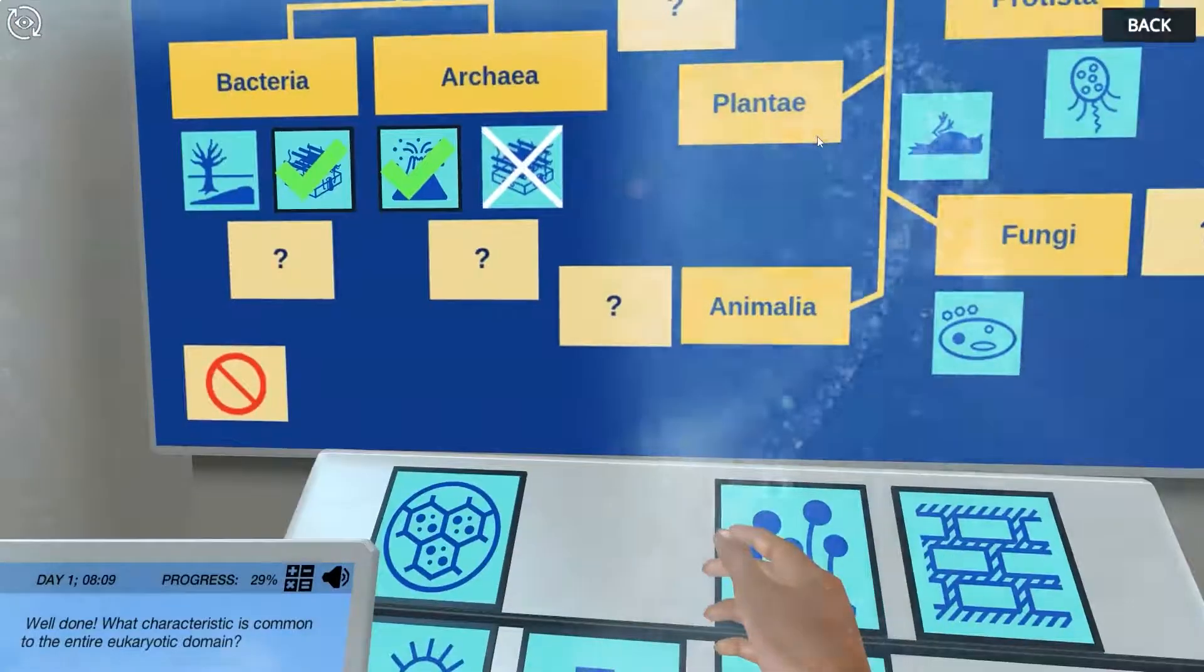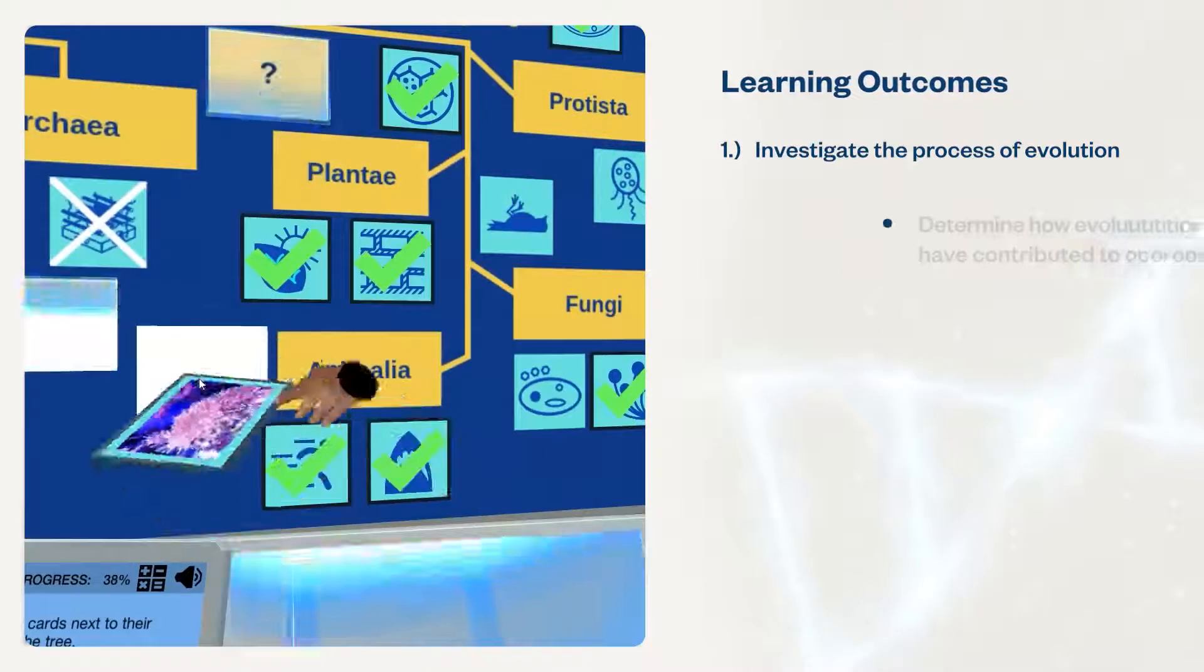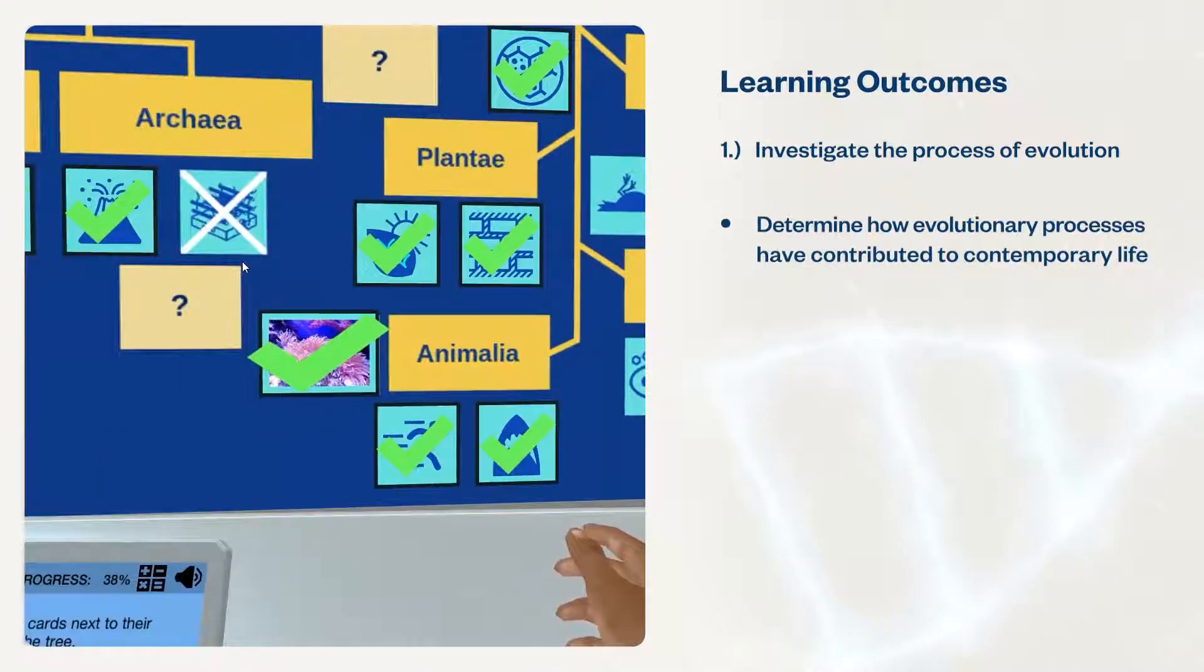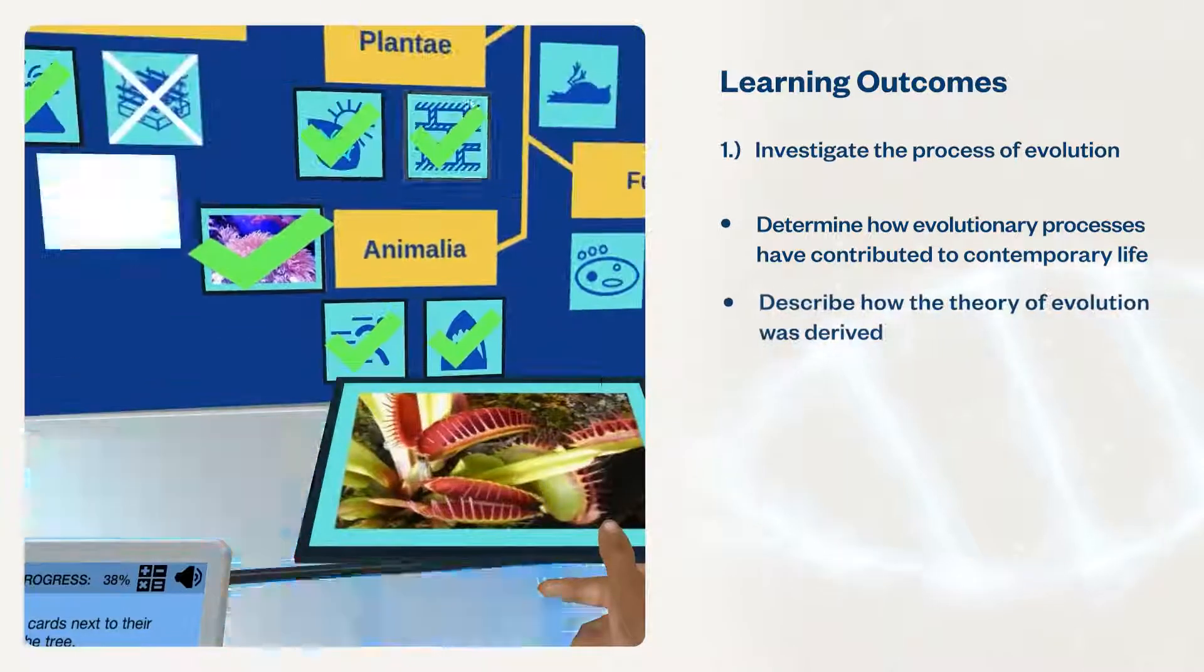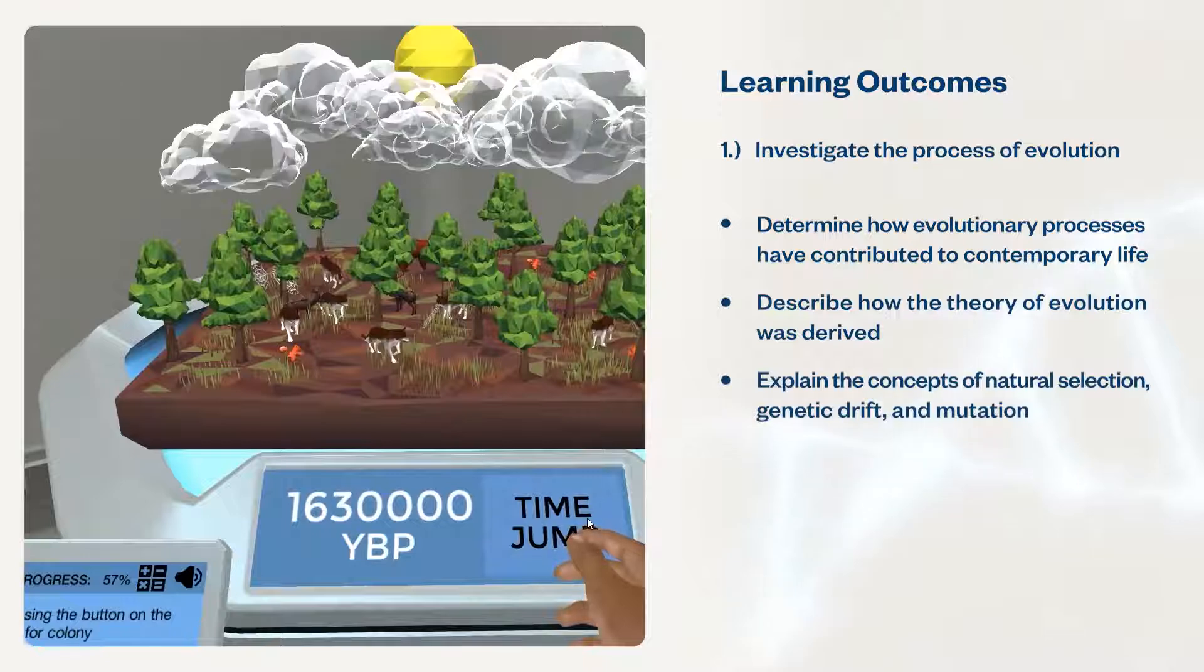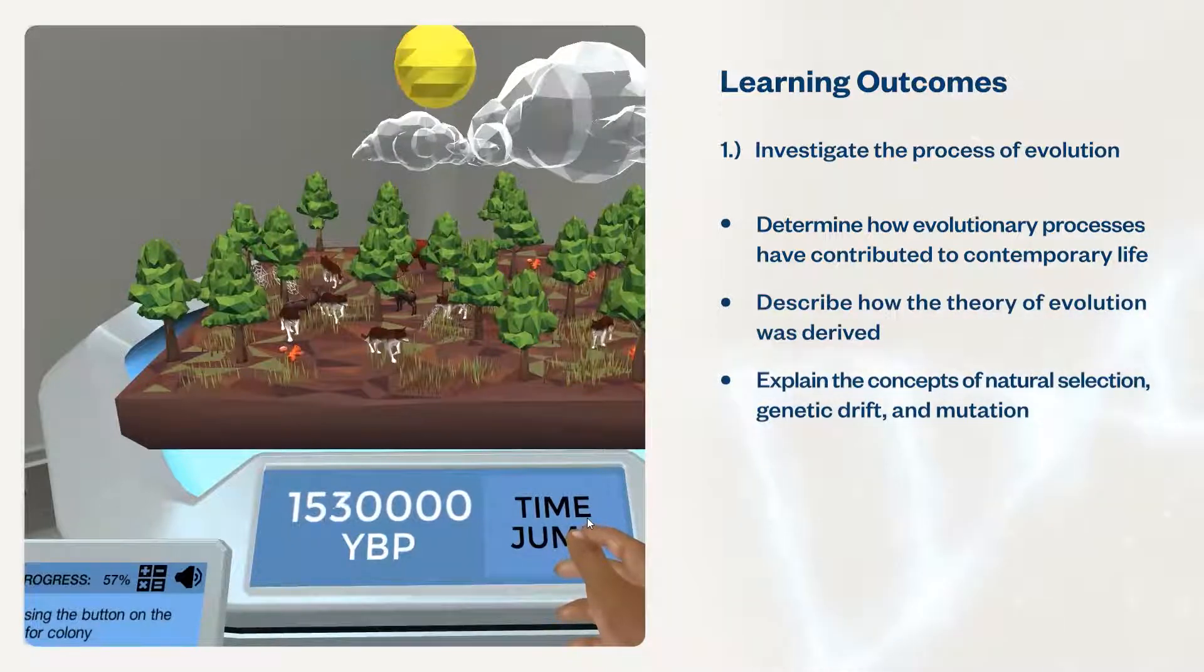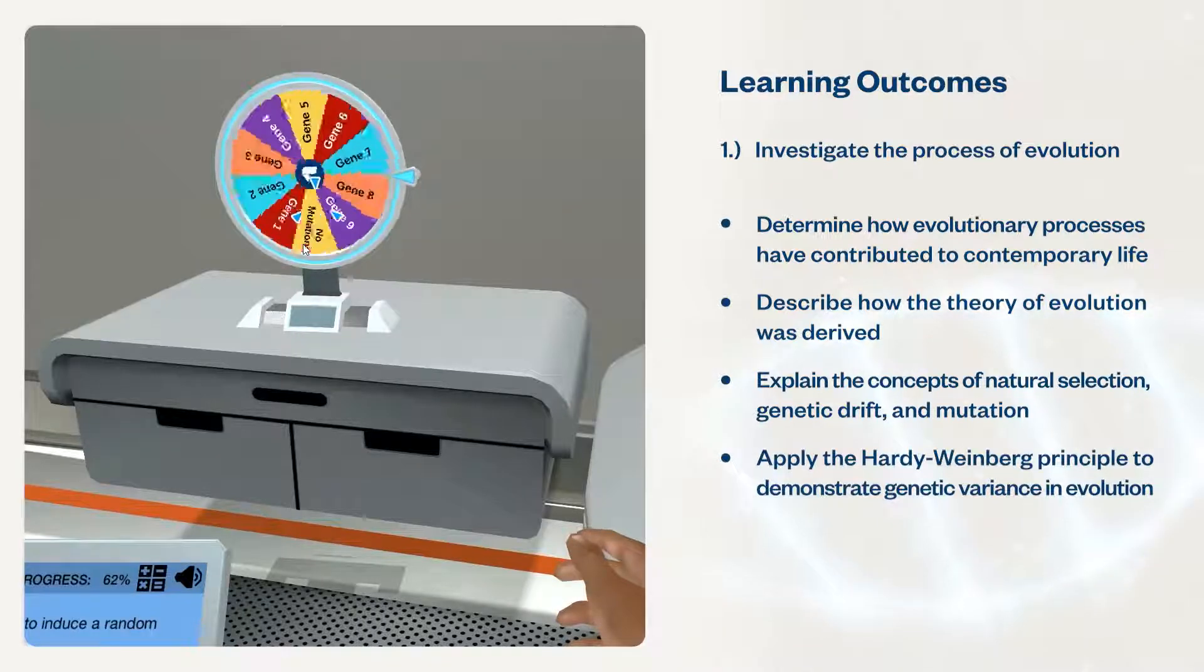These simulations will help students investigate the process of evolution, critically determine how evolutionary processes have contributed to contemporary life, describe how the theory of evolution was derived, explain the concepts of natural selection, genetic drift, and mutation, and apply the Hardy-Weinberg Principle to demonstrate genetic variance in evolution.